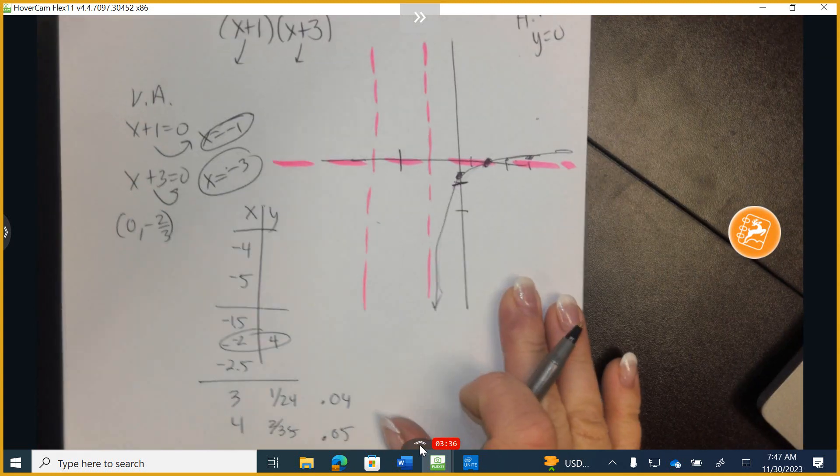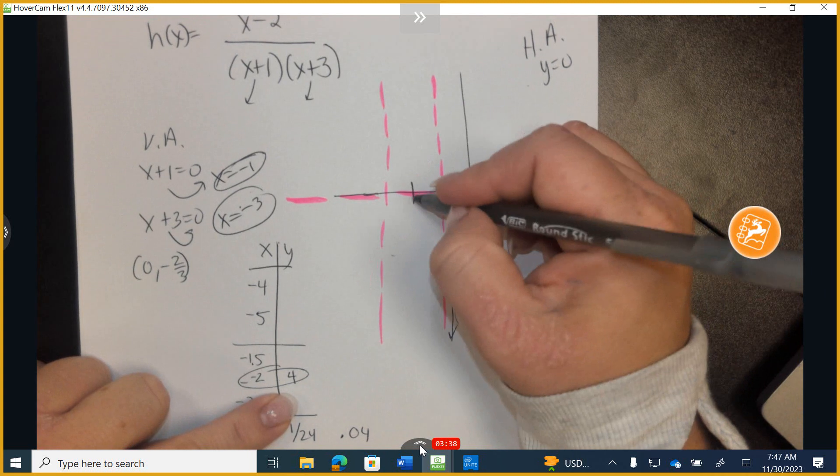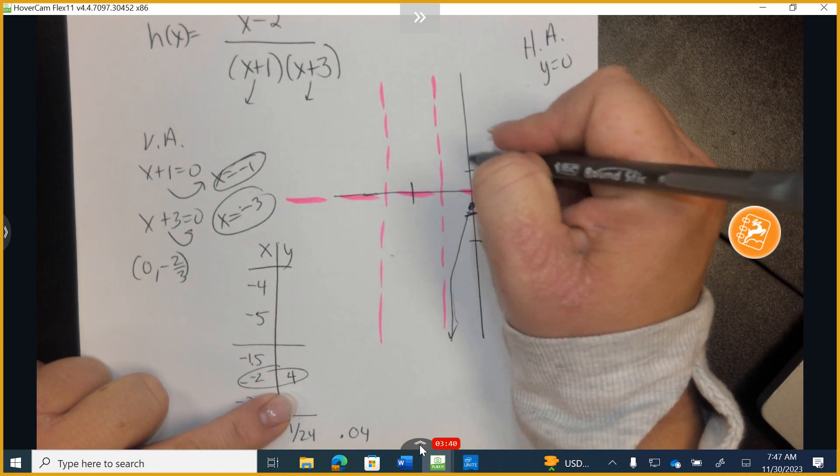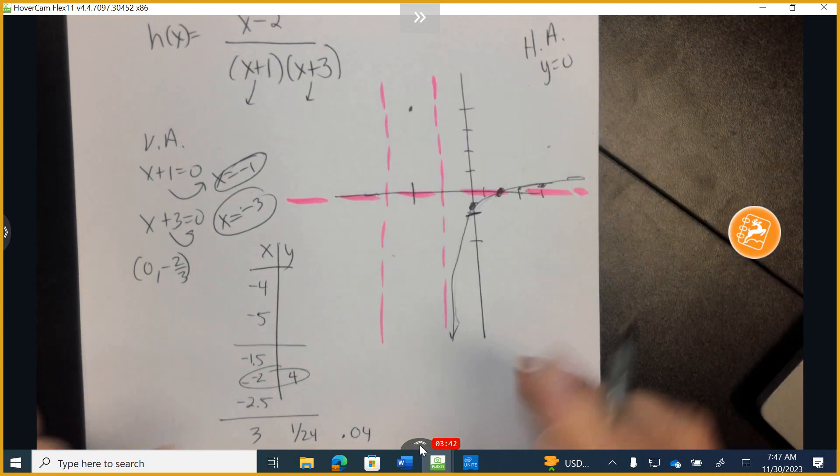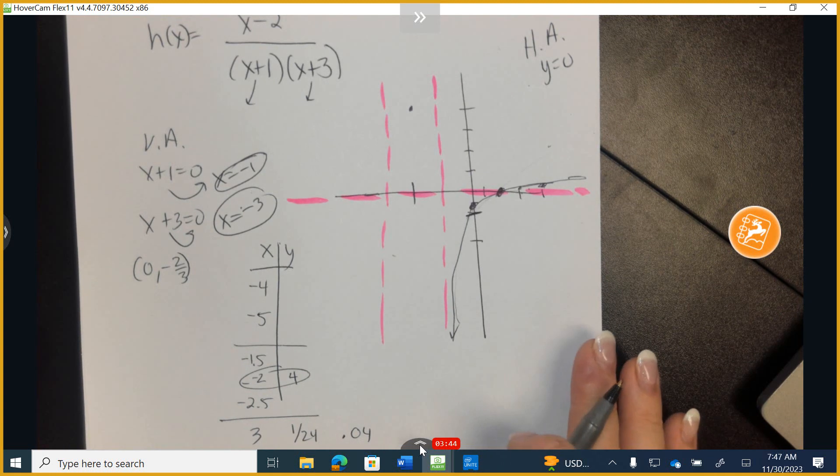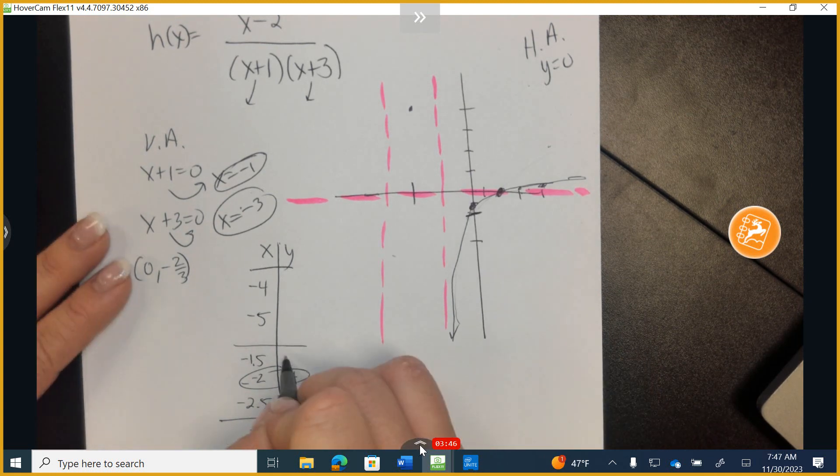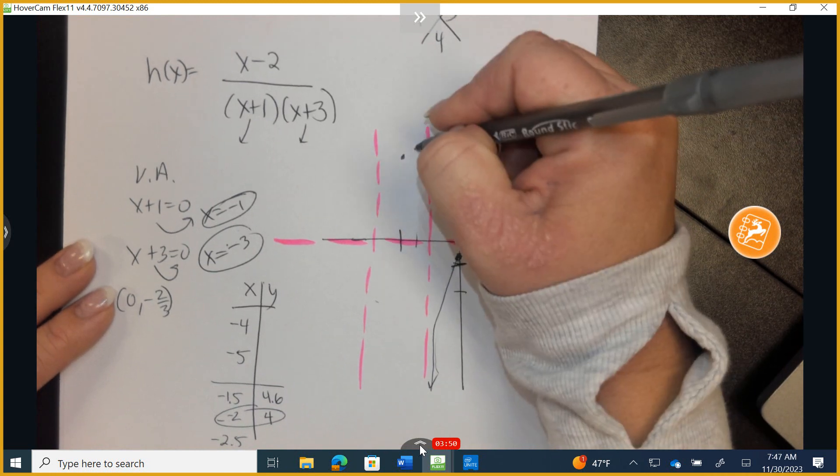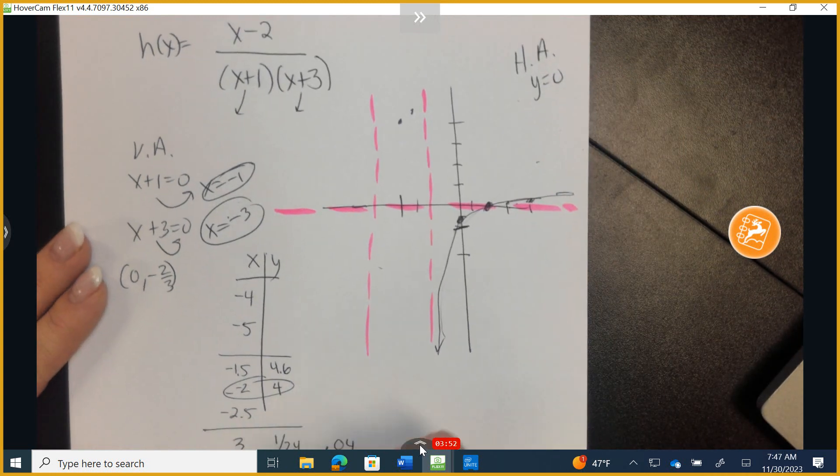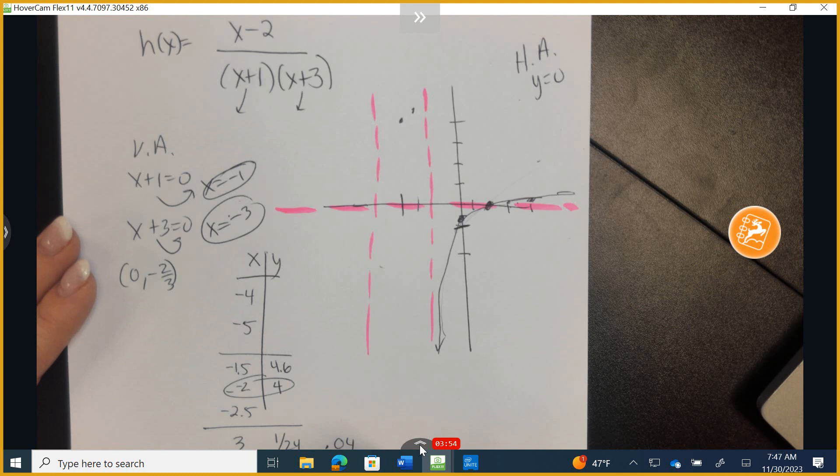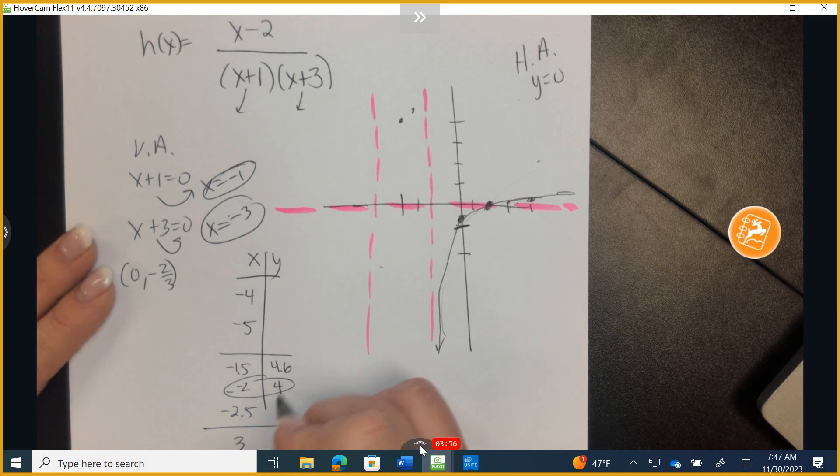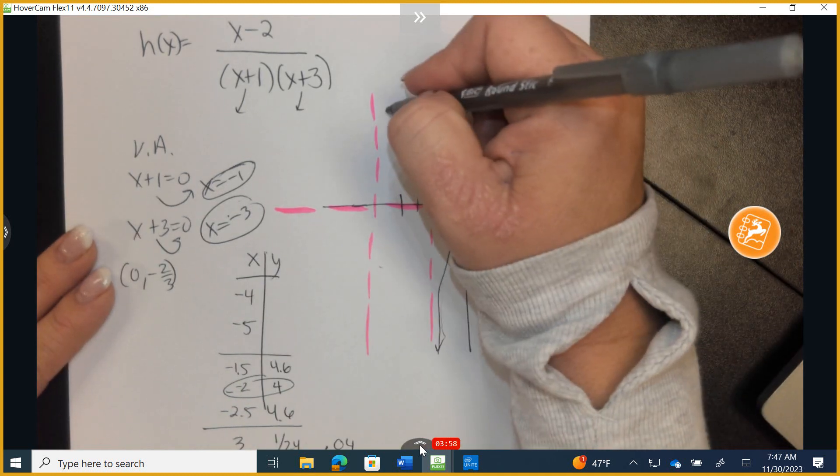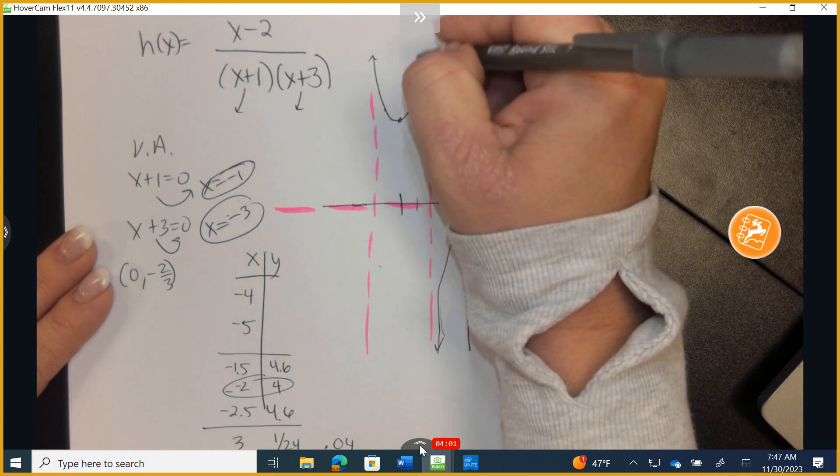Then in the middle section, you told me that at -2, you went up to 4. What else do we have? Anybody do -1.5? 4.6 repeating. So we're just going to go slightly up. And did anybody do -2.5? It should be 4.6 repeating. So it's looking like this.